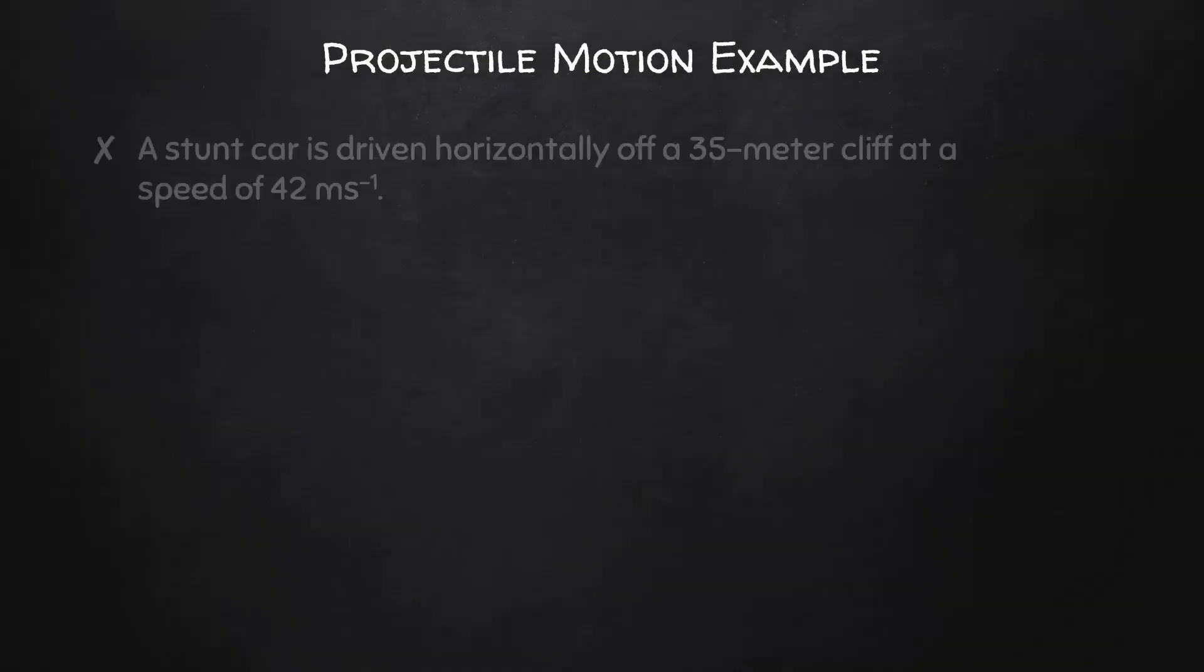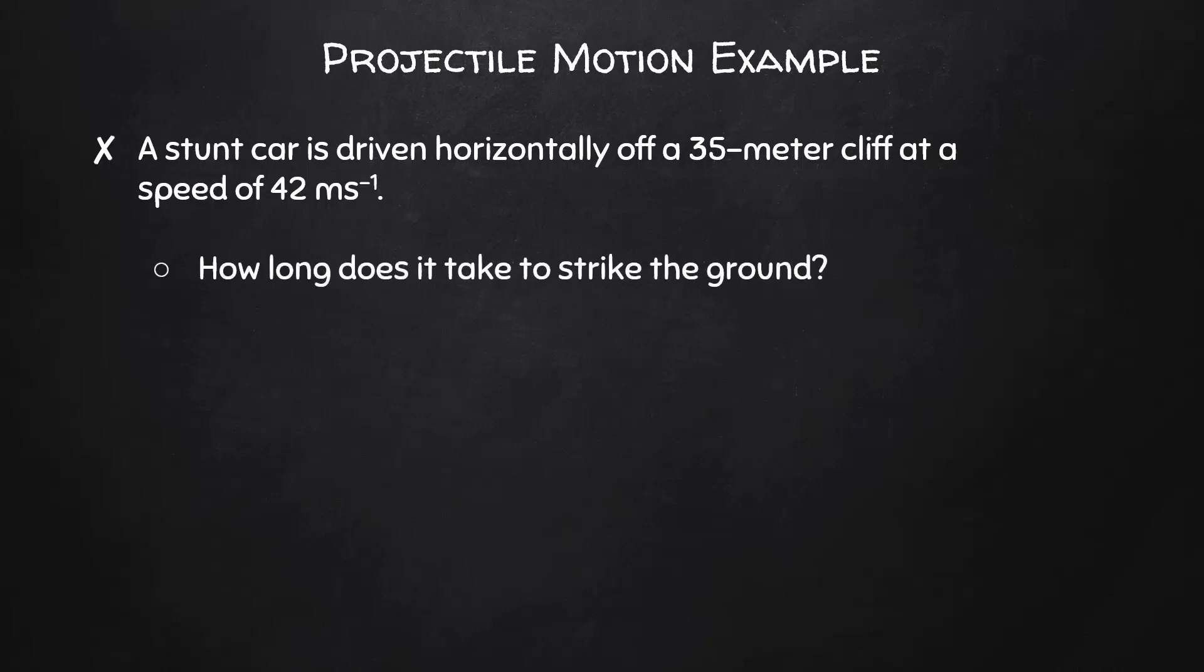Let's do one more. A stunt car is driven horizontally off a 35 meter cliff at a speed of 42 meters per second. First, how long does it take the car to strike the ground? You should calculate a time of 2.7 seconds. Next, how far from the base of the cliff does the car land? You should calculate a horizontal displacement of 95 meters. That's it for now. See you next time.